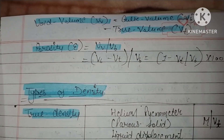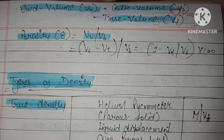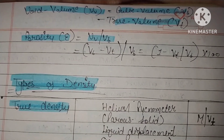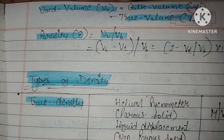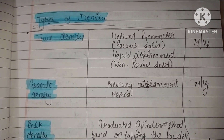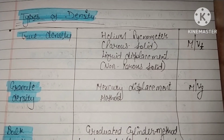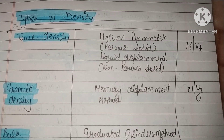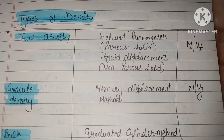First, density formula: density = mass upon volume — the powder's mass divided by its volume. Now, types of density: true density, granule density, and bulk density. For true density, you can use a helium pycnometer for porous solids, and liquid displacement (m/ρt) for non-porous solids.